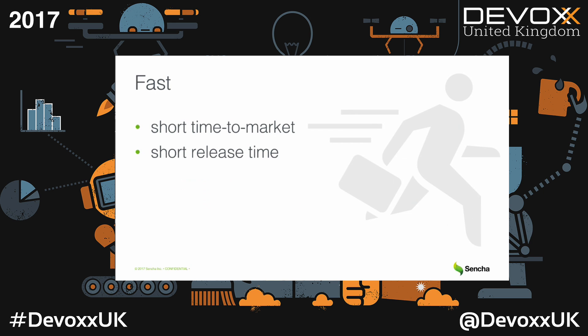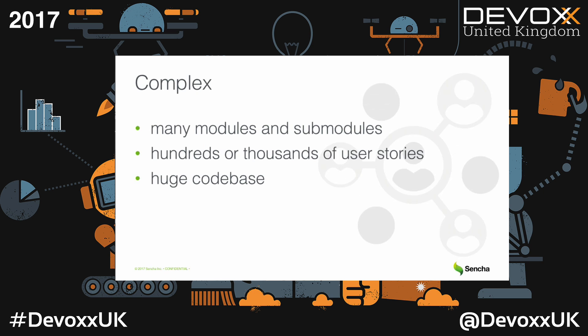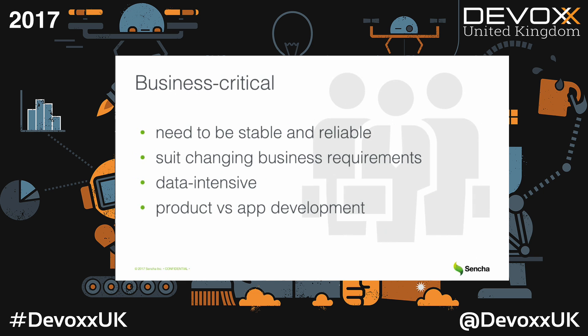What does fast mean? Fast means that to be competitive, enterprises have to shorten time to market as well as release time for every new version of the application. What makes an application complex? An application is complex when it has many modules, sub-modules, hundreds or even thousands of user stories, many years of development, and a huge code base. And what makes an application business critical? Business critical enterprise applications have to be stable, reliable, and suit changing business requirements.